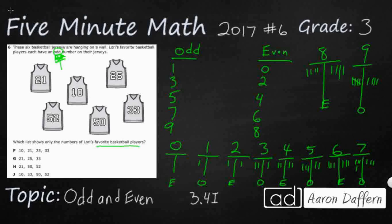If we were to go up to 10, we know that 10 would be an even number because it follows the pattern — even, odd, even, odd. But we also know 10 is even because of what's in the ones place. That's the trick with even and odd: all you have to do is look at the ones place. 12 is even because it has a 2 in the ones place. Any number that ends with 0, 2, 4, 6, or 8 is even — it doesn't matter if it's 34, 106, or 9,878. We're just looking at the ones digit.